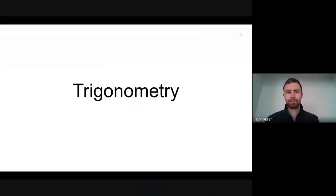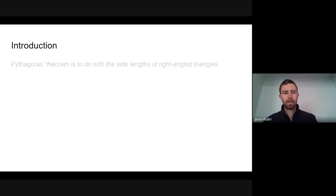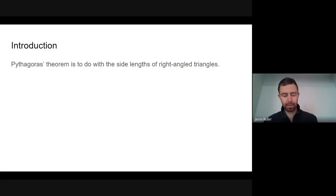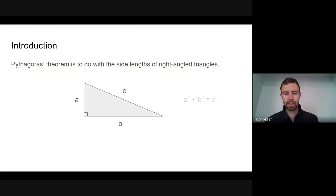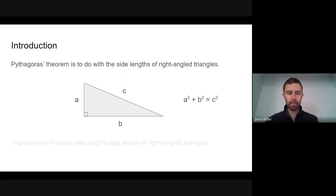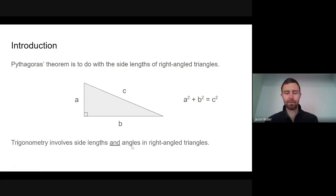We are going to start looking at trigonometry. So far we've learned about Pythagoras's theorem — that's what we've been doing. Pythagoras is about the side lengths: a and b are the short sides, c is the long side, and short side squared plus short side squared equals long side squared. What we're moving on to involves side lengths and angles. Pythagoras is just about side lengths; trigonometry involves both side lengths and angles.